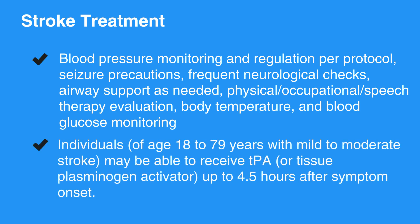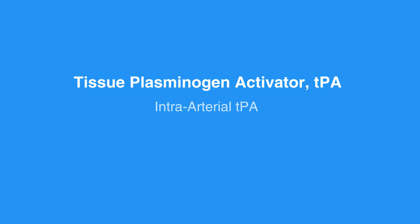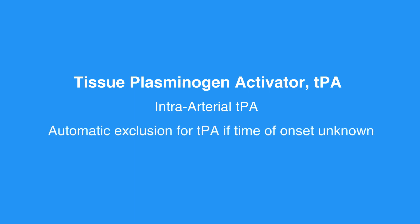Certain individuals aged 18 to 79 years with mild to moderate stroke may be able to receive tPA, or tissue plasminogen activator, up to 4.5 hours after symptom onset. Under certain circumstances, intraarterial tPA is possible up to six hours after symptom onset. When the time of symptom onset is unknown, it is considered an automatic exclusion for tPA.